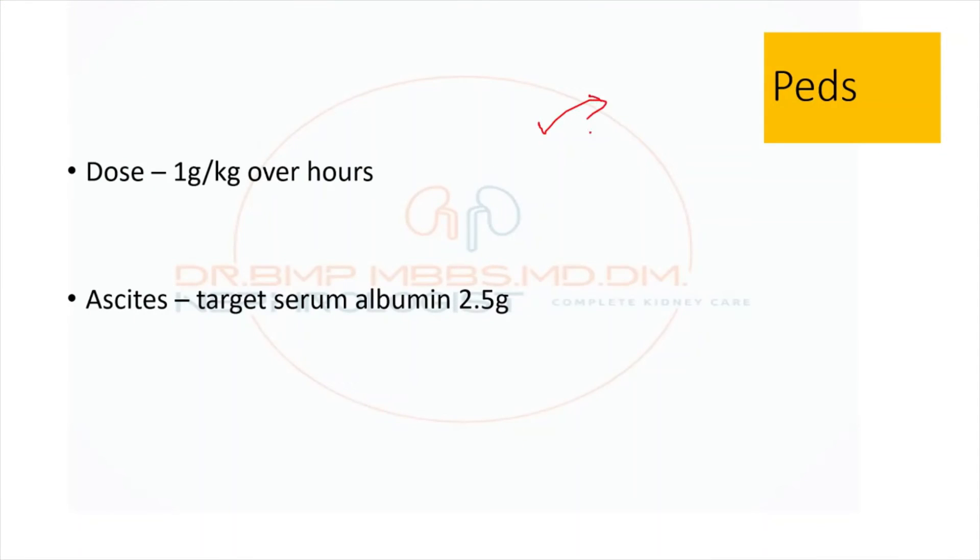Another common clinical situation encountered regarding pediatric dosage: the dosage is 1 gram of albumin per kilogram of the child, that is the overall dosage, and it has to be given similar to adults over 2 to 3 hours. In a child who is having massive ascites, the dosage can be titrated to target a serum albumin of more than 2.5 grams.